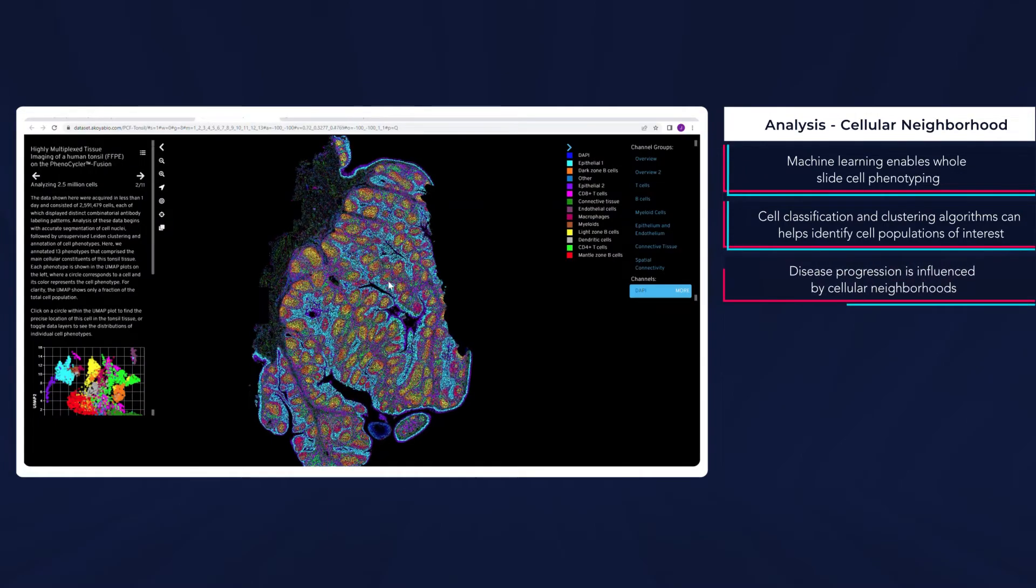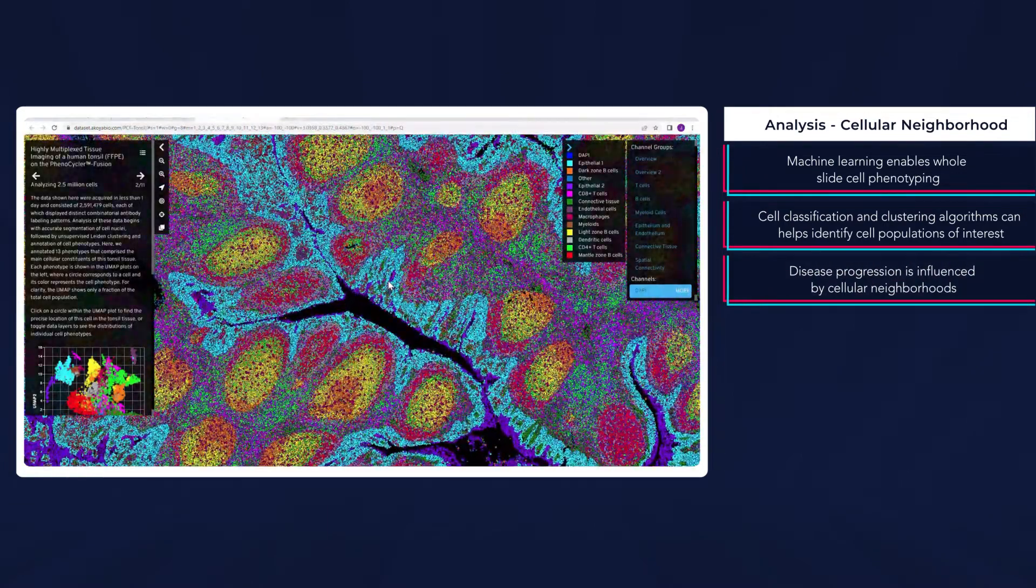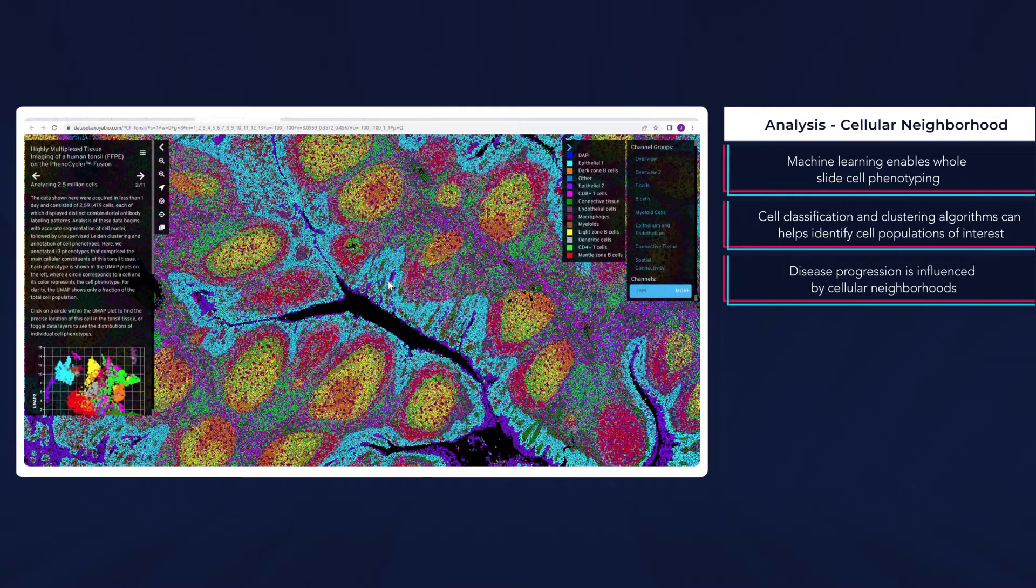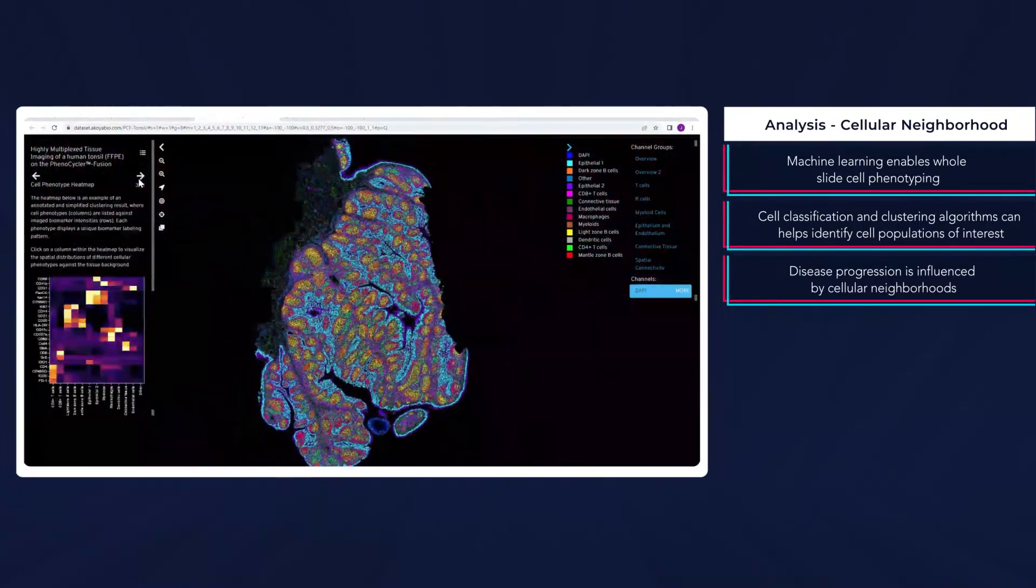As the story of cellular interactions take shape, we can explore the cellular neighborhood, cells that organize into distinct spatial patterns that may influence disease progression.